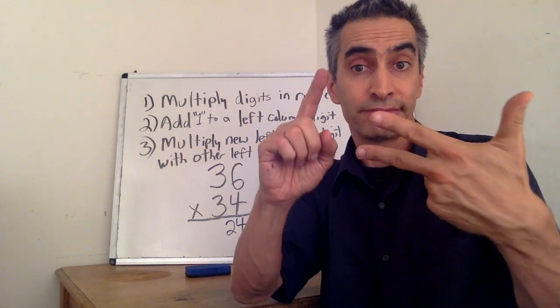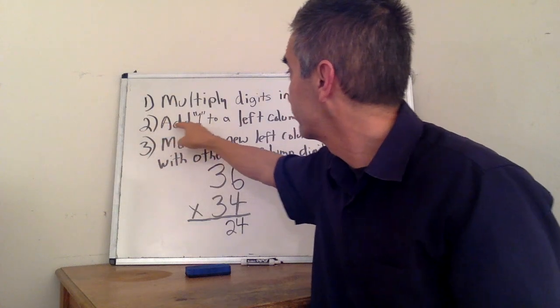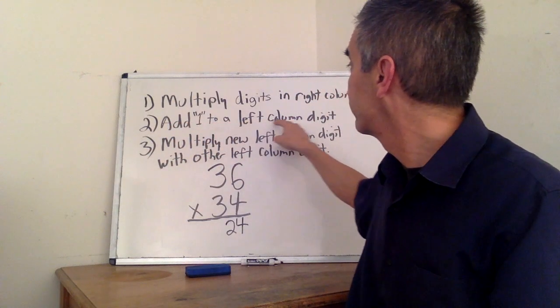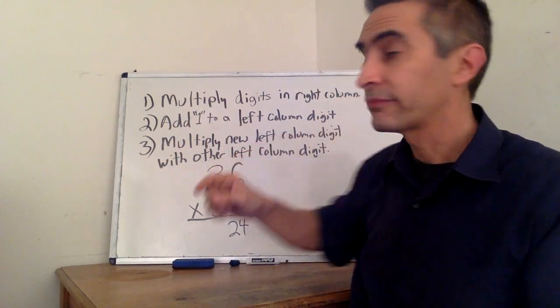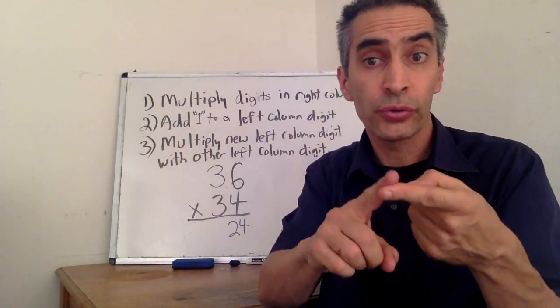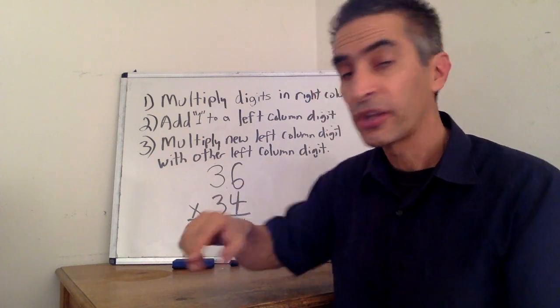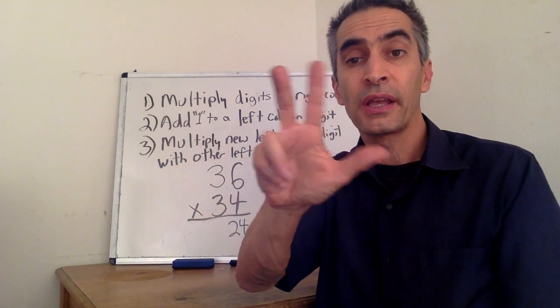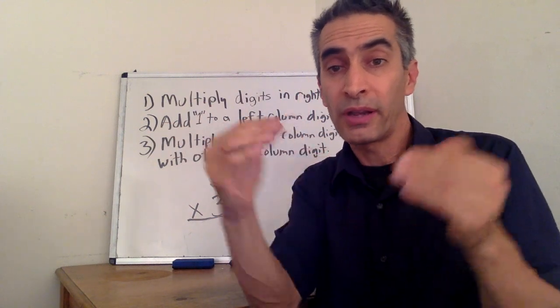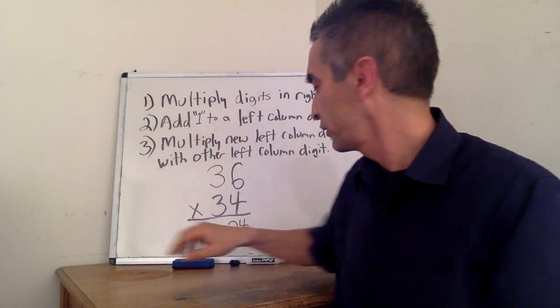Next, add 1 to a left column digit. 3 plus 1 equals 4.